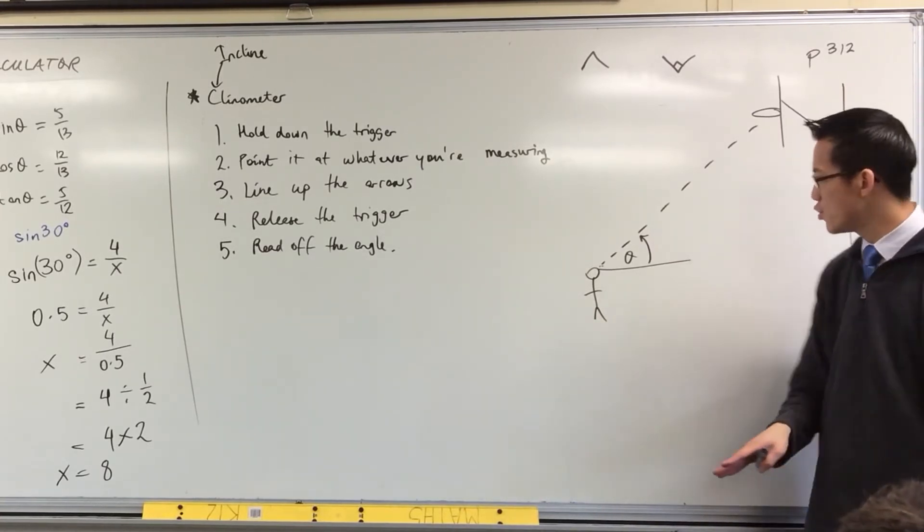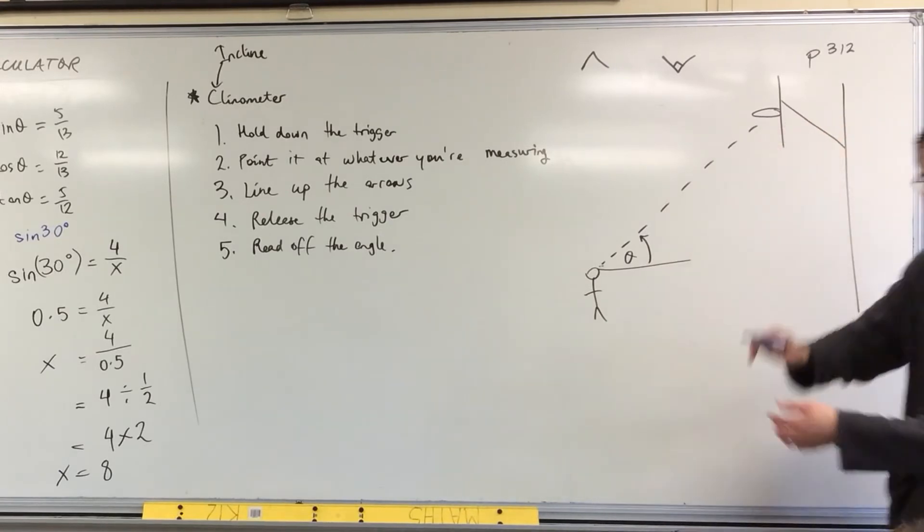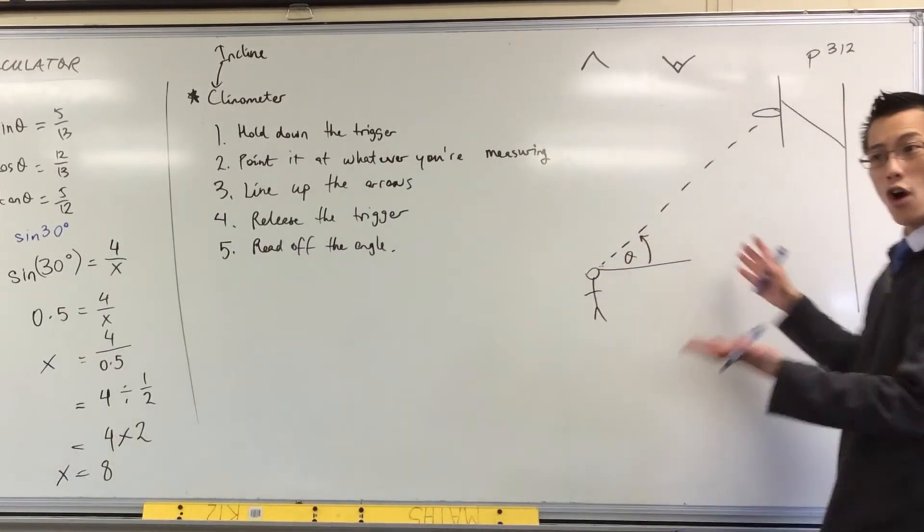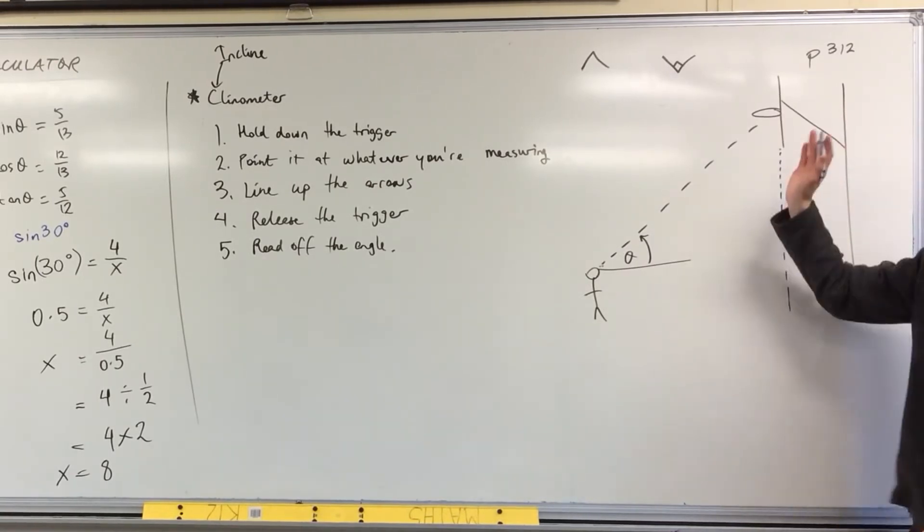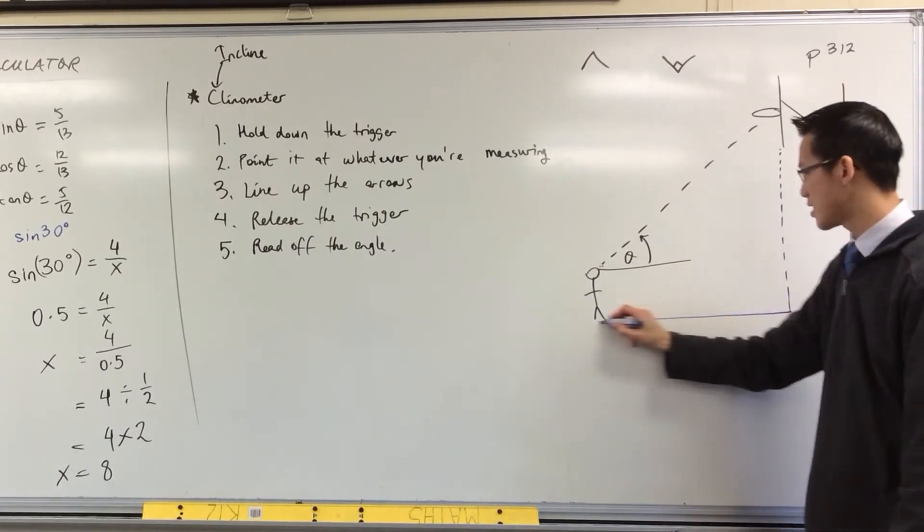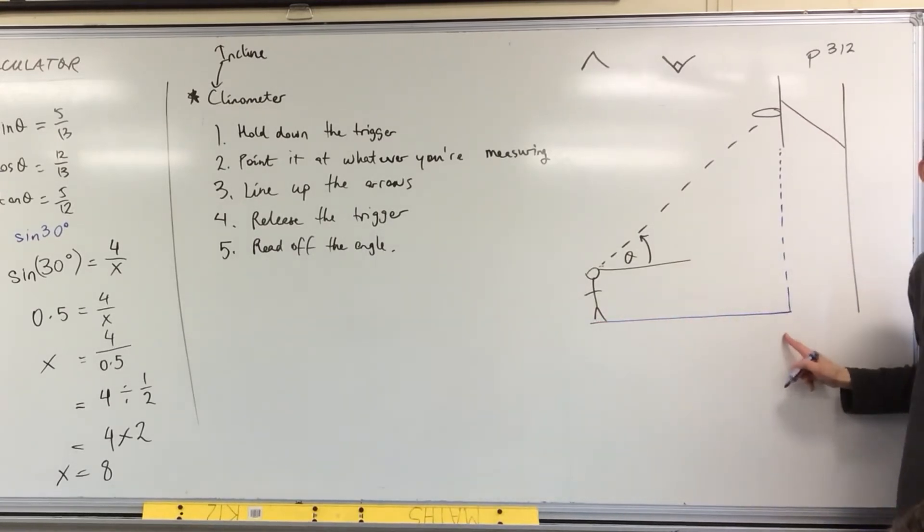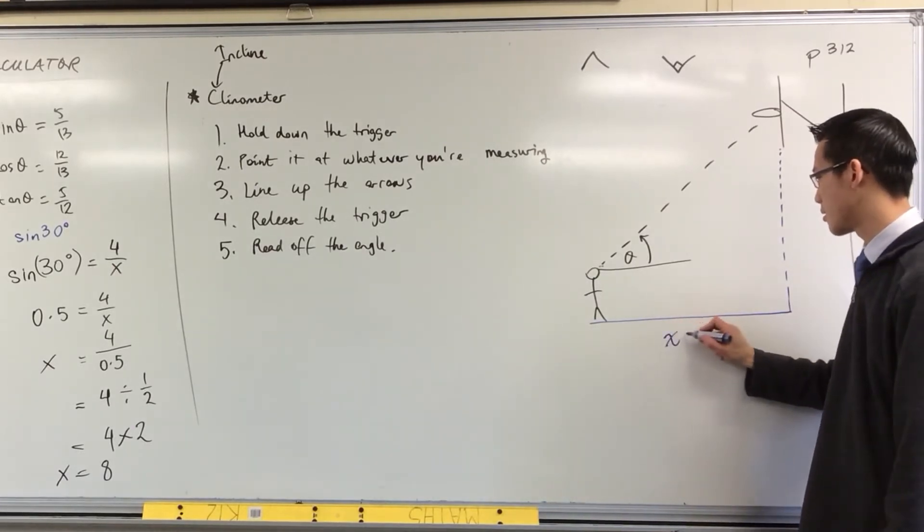The other measurement you will need is, whatever object you're measuring the height of, you want to draw a line down from that direct to the ground. So this should be vertical. And then you want to measure the distance from you to that spot on the ground. From you to that spot on the ground. Let's call that x metres.